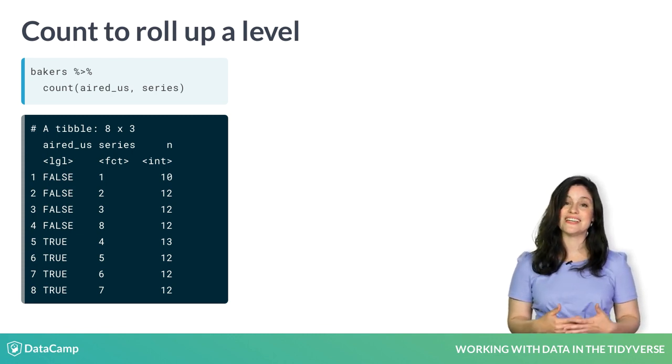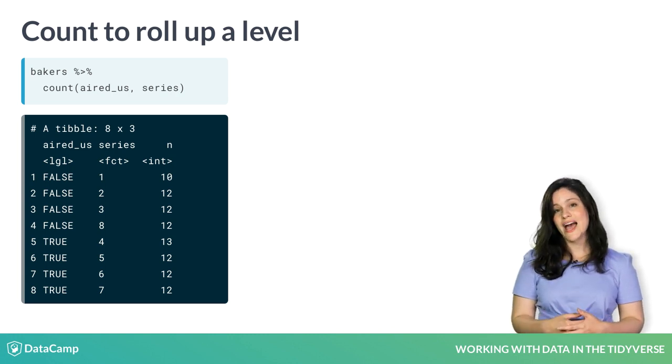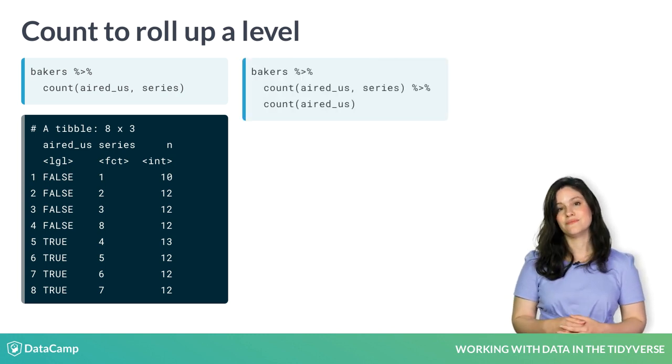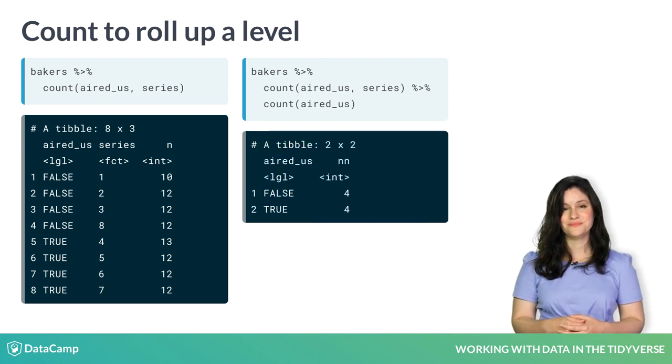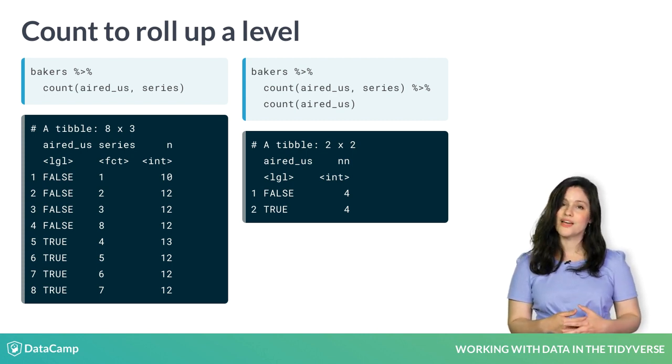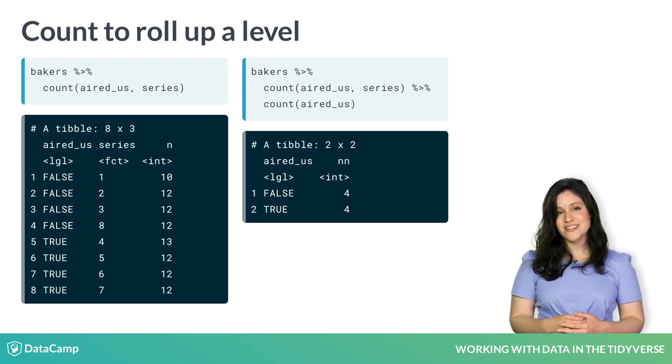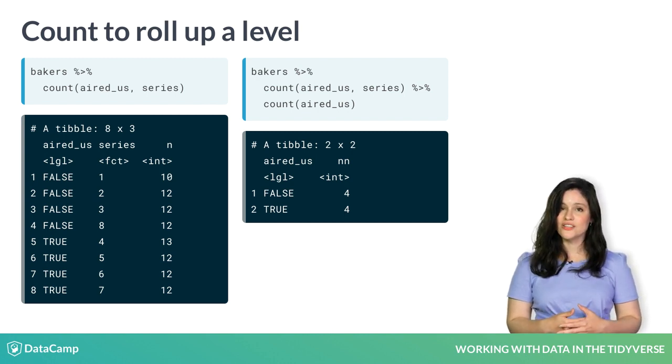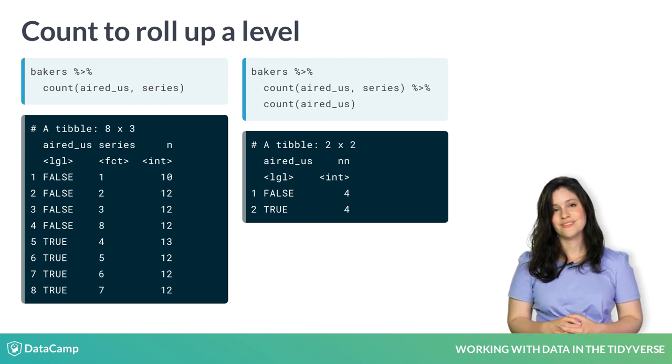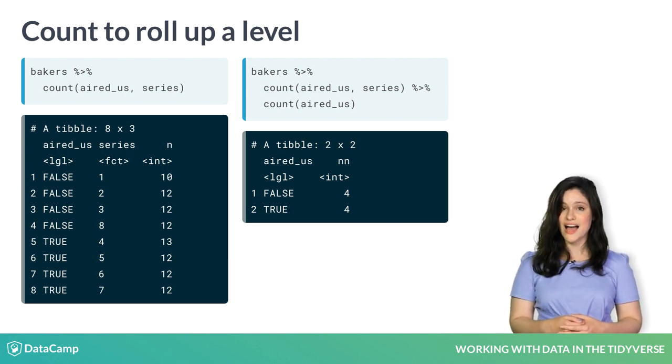To just count the number of series that aired in the US, ignoring the number of bakers, we can count by the same variable twice to roll up a level. The output here has only two rows. One for when aired_US is false, and one for when it's true. The column named 'nn' is the number of series that aired in the US and the number that did not. This second count ignores the values in the 'n' column that we see on the left.